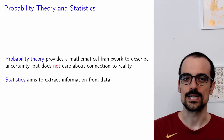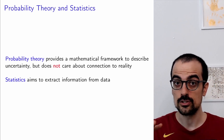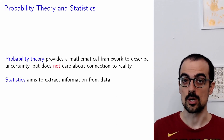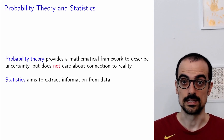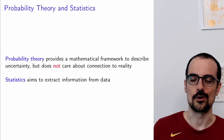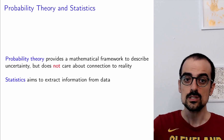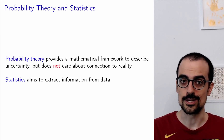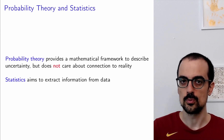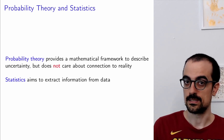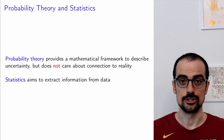Statistics studies how to extract information from data, and for that it uses a lot of tools from probability theory. So these two disciplines are definitely intertwined, and when we use them for data science, even more so. Today we're going to be focusing on the statistics side of things — how do we use data to estimate probabilities and conditional probabilities?